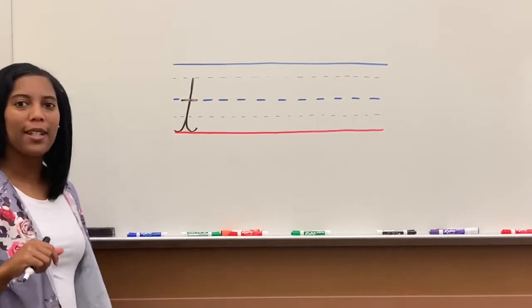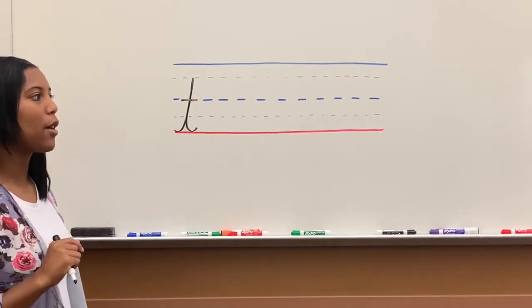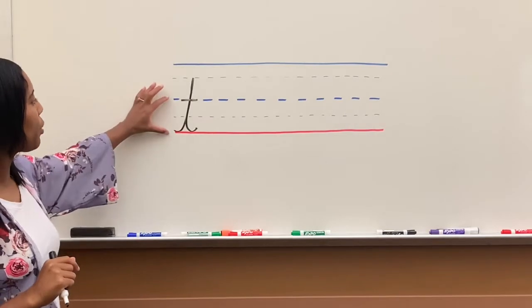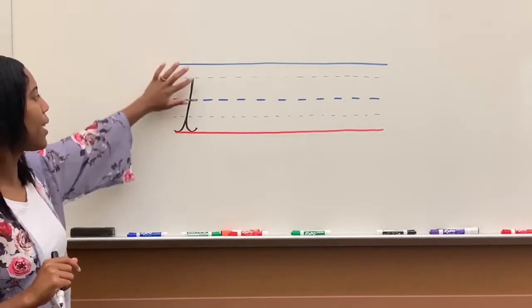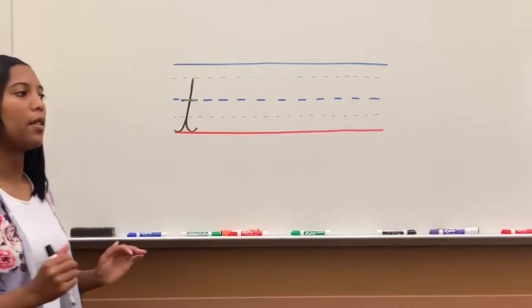If you look at letter T, you can already see that it's different from the other letters that we have written. The other letters we wrote were from the middle line to the red line. T actually goes above the middle line.